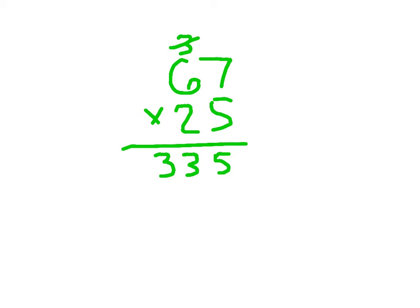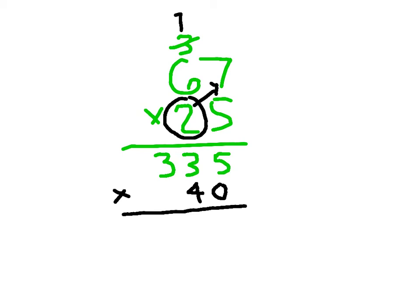Most students can figure out this first line. This is where some students get confused — they don't remember what to put on the second line. What we put is the answer to 67 times 20. Some students forget to place that magic 0, so their answer will automatically be wrong. We place the 0, then figure out 67 times 2 step by step: 2 times 7 is 14, place the 4, regroup the 1; 2 times 6 is 12 plus 1 is 13. Line up your digits nicely and add to get the product of 67 times 25.